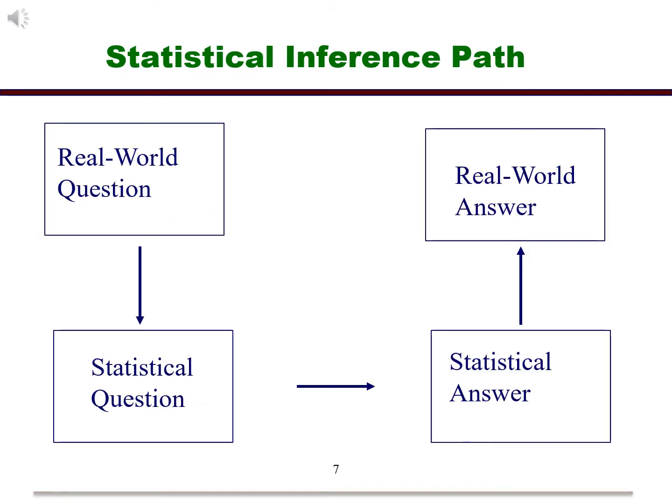For almost all problems that we deal with in statistics, especially with statistical inference, it is critical to be able to translate between the real world and the statistical technique. First, we need to define the question in the context of the situation or the real world. Then we translate that to the statistical question. We then use the statistical technique of choice to come up with the statistical answer. Then finally, translate this back to the real world. Let's look at an example.